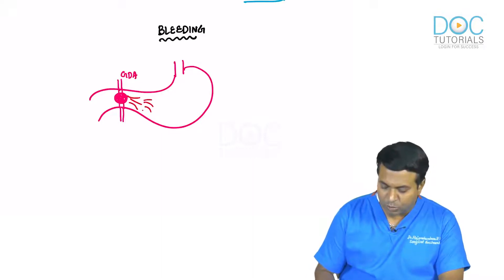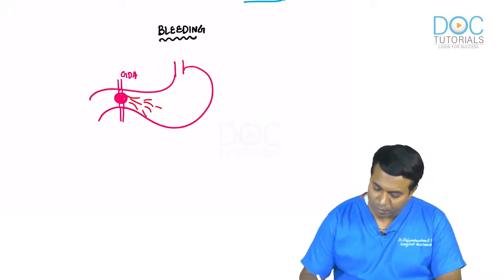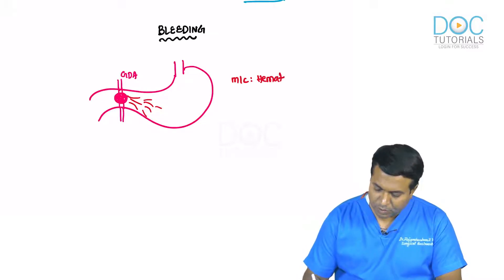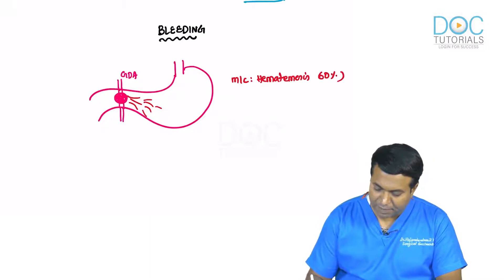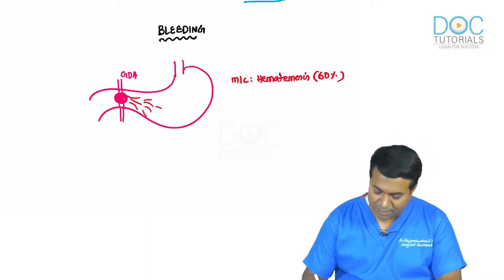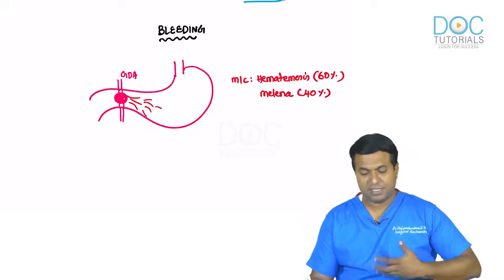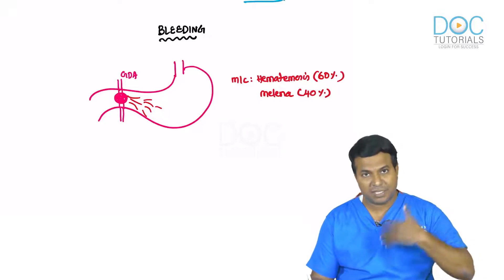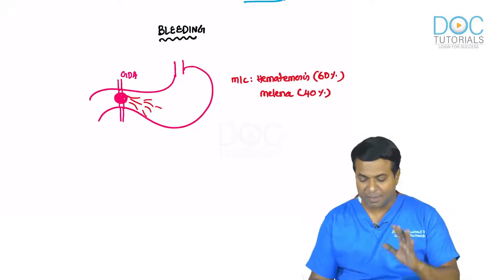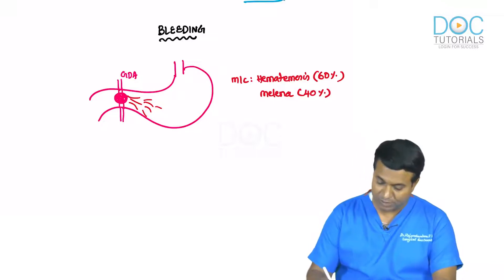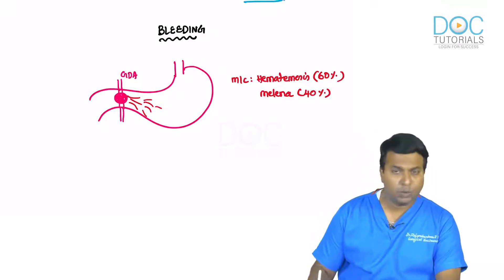Bleeding into the duodenum presents most commonly with hematemesis — 60% of the time — and 40% of the time with melena. This is the classic presentation of a bleeding duodenal ulcer.